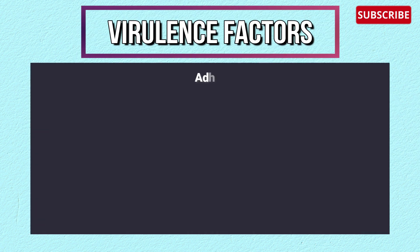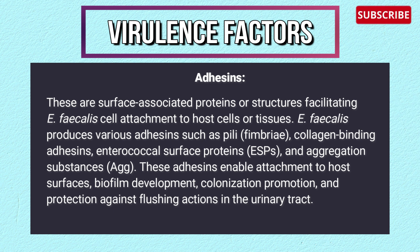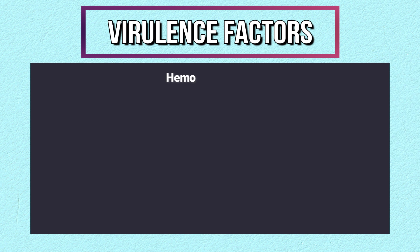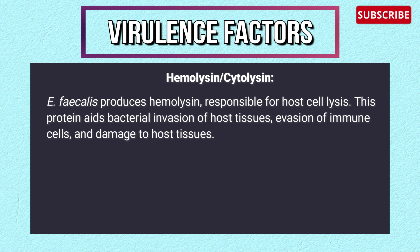Virulence factors of Enterococcus faecalis — adhesins: these are surface-associated proteins or structures facilitating cell attachment to host cells or tissues. It produces various adhesins such as pili, fibronectin-collagen binding adhesins, enterococcal surface proteins, and aggregation substances. These adhesins enable attachment to host surfaces, biofilm development, colonization promotion, and protection against flushing actions in the urinary tract.